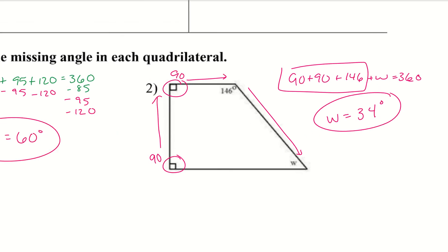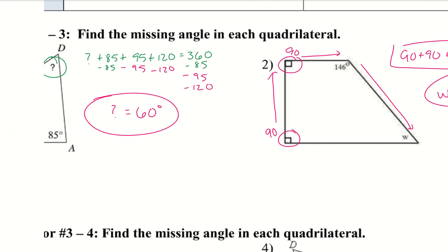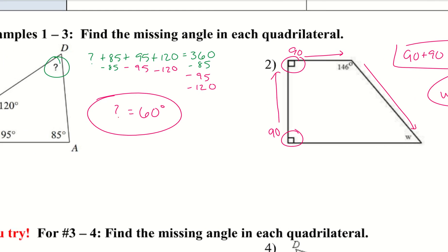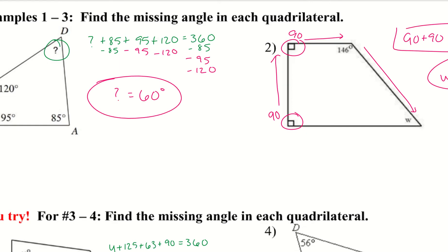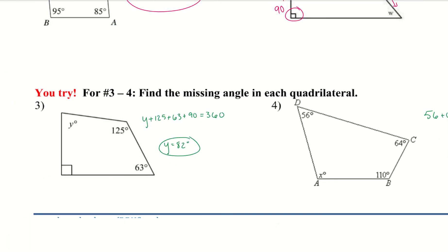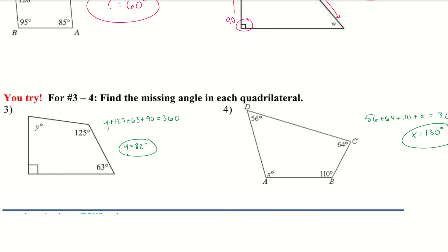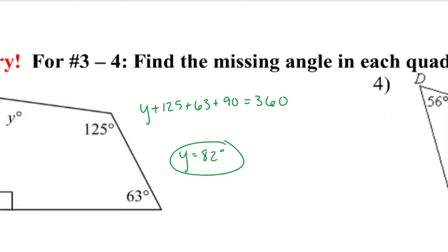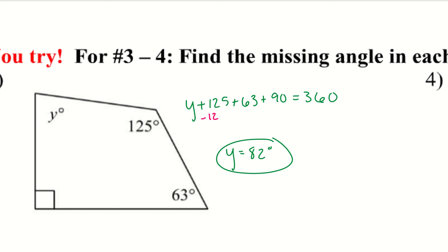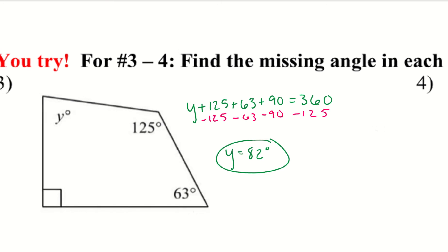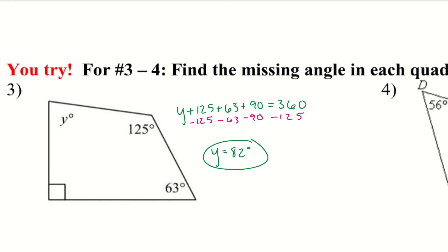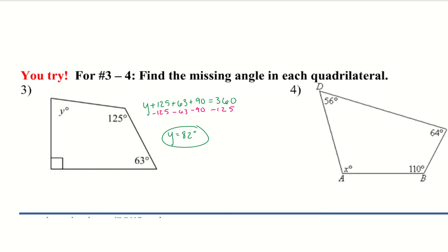Numbers 3 and 4 are your tries — go ahead and give them a shot. Pause the video. Let's go ahead and take a look at them. I set them all up the same way. You can take it step by step: minus 125, then minus 63, then minus 90. You don't have to do it all in one step — since it's addition and subtraction, I just plugged it into my calculator.